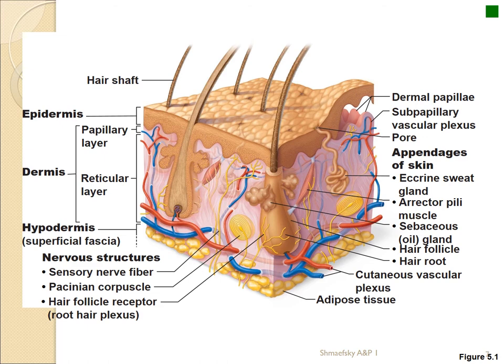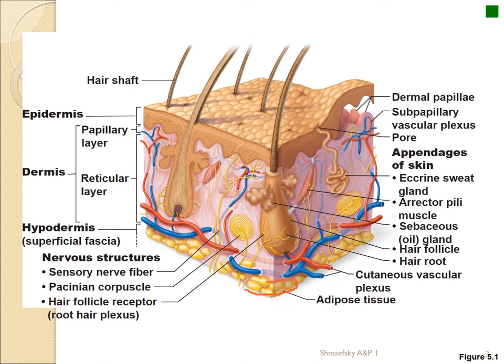Looking at these layers, we can see the epidermis, which is sometimes pushed down into lower layers with modifications like hair follicles. The dermis contains connective tissue, epithelium, and blood vessels. Right where you see the fat layer is your superficial fascia — connective tissue, mostly adipose connective tissue.